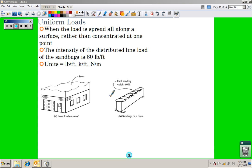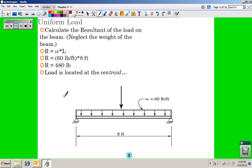But it's simple to convert this into a single load. If we neglect the weight of the beam in this case, and we say we have a distributed load of 60 pounds per foot, the overall load, the resultant of that, is just the little w times the length of the beam. So you take 60 pounds per foot, multiply by eight feet, and you get 480 pounds.